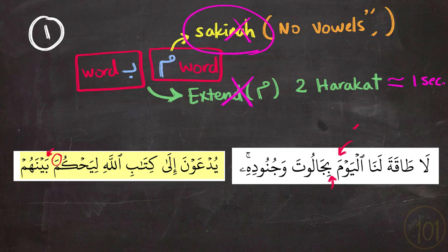So we see in these two examples that the Meem has a vowel on top and it is followed by a Ba', but in this case, nothing special happens and we'll pronounce it normally as any other Meem.